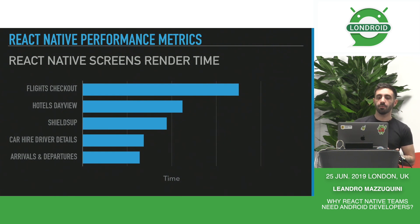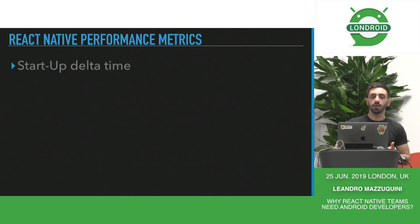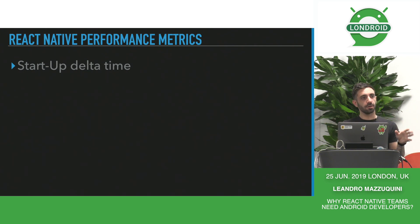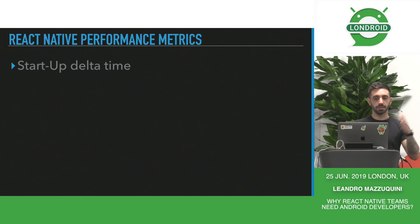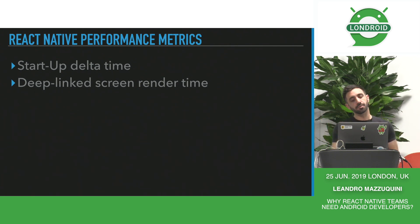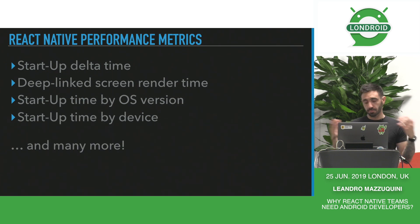Another example is React Native screens render time — simply how long it takes to render every React Native screen in our app. We have lots of metrics. A few more: startup delta time is our most important metric, defined by the relationship between the native startup process and the React Native startup process — I'll talk about this specific metric later. Deep link screen render time measures how long it takes to render a screen when directly deep linking to it. We can also do queries like startup time by OS version or by device — we have a dashboard full of metrics.